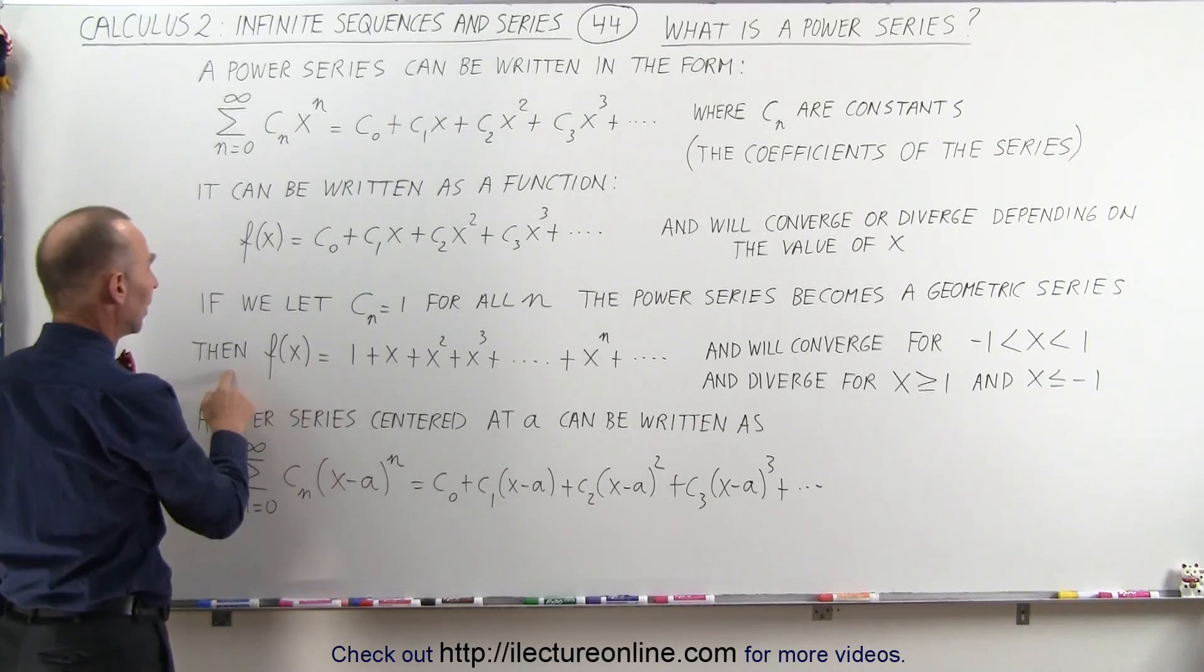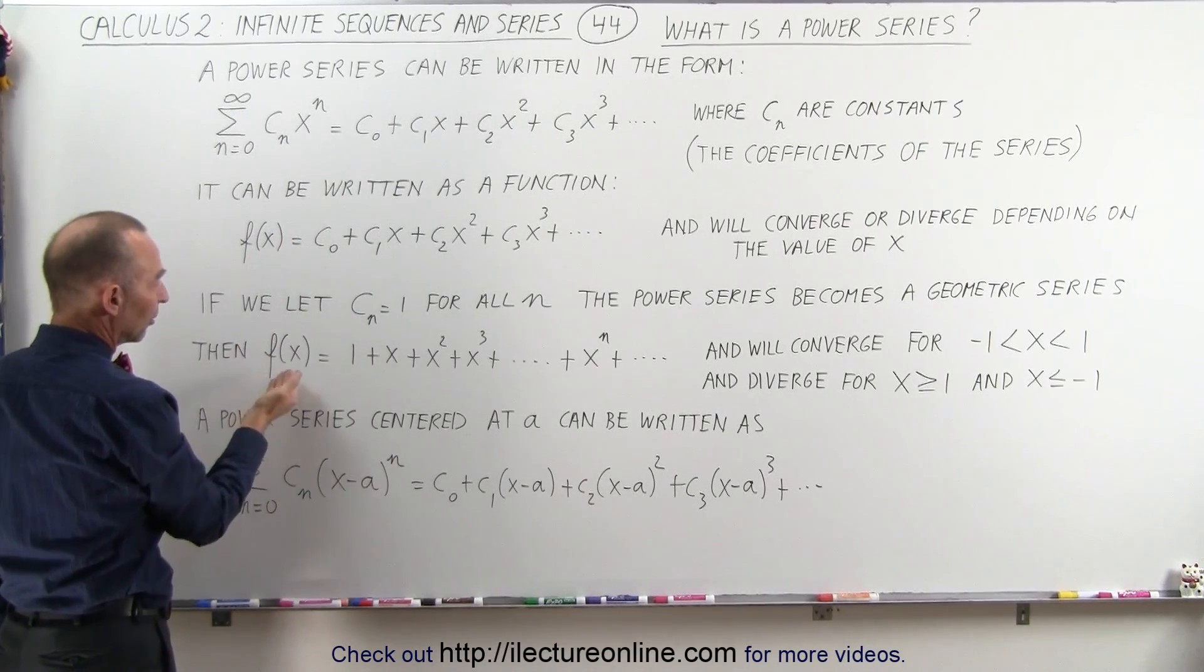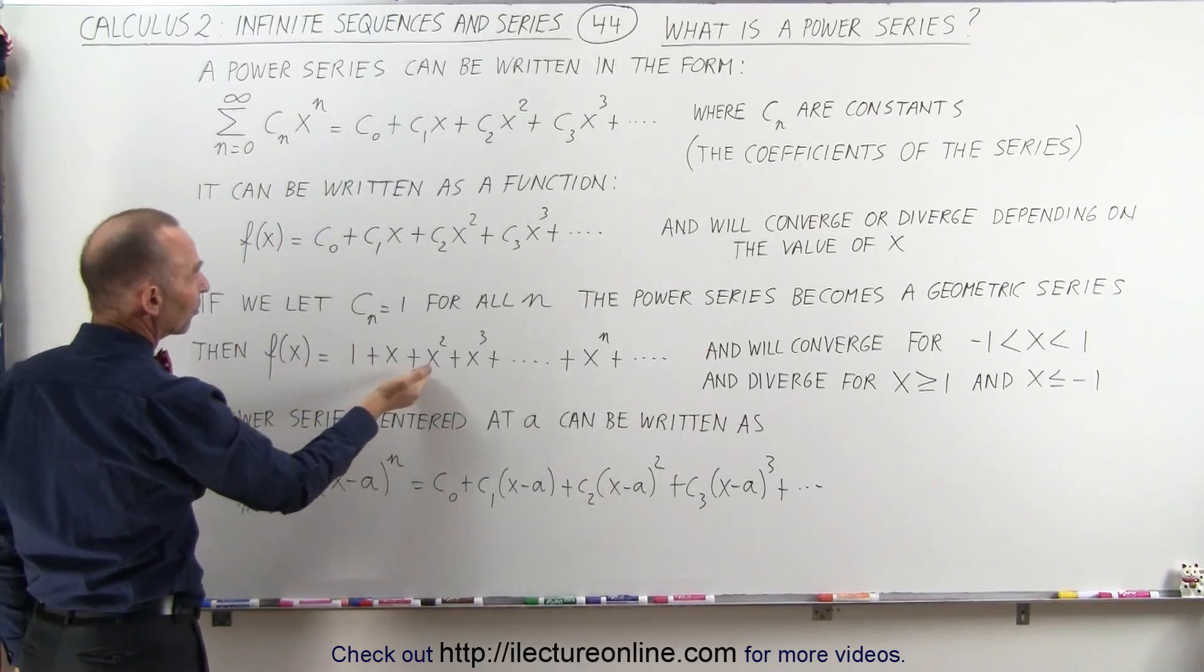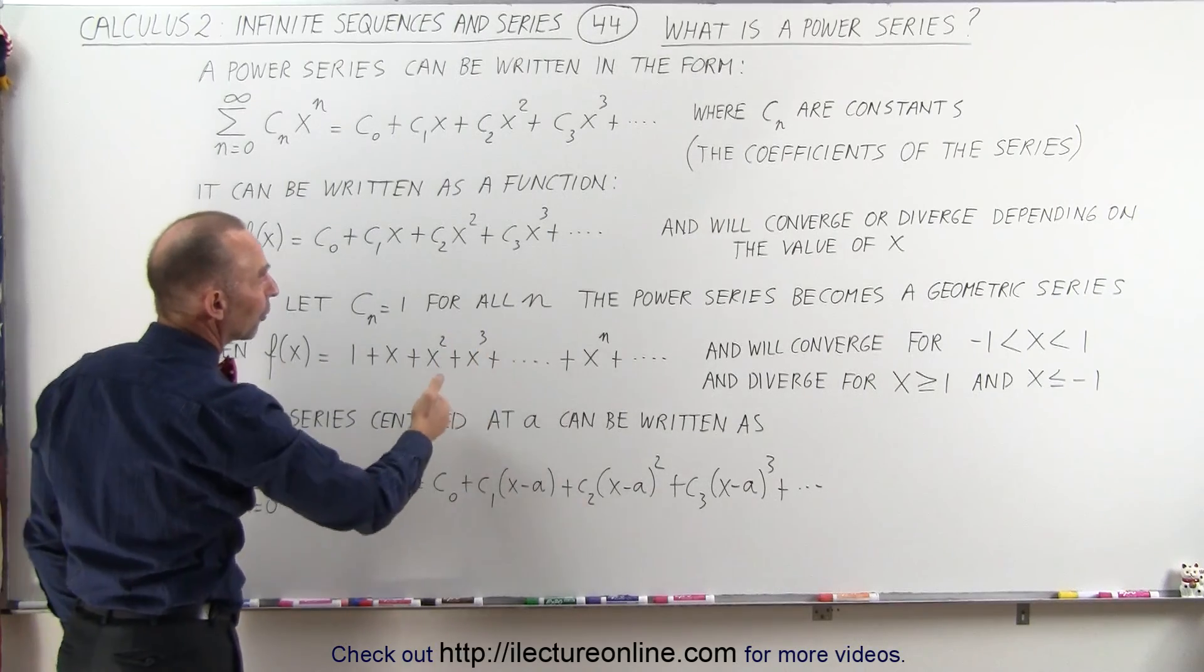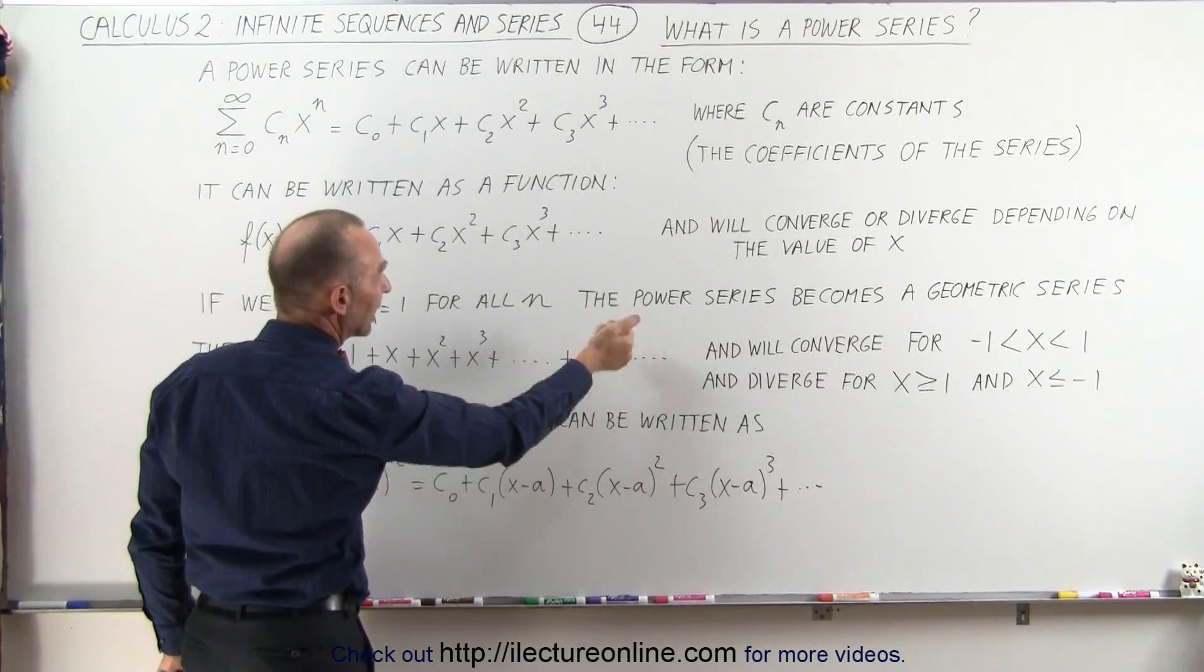It will then look as follows. And if we write it as a function, the function will then be 1 plus x plus x squared plus x cubed and so forth. Any term will be x to the n power, from n being from 0 to infinity.